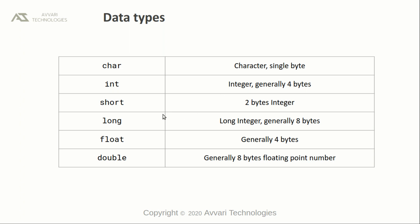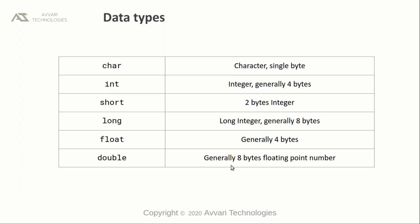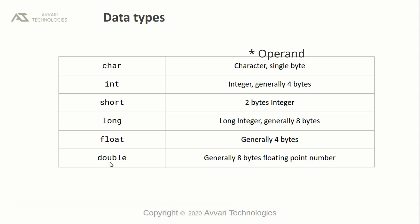Generally short is a two-byte integer, long is eight bytes, float is four bytes, and double is an eight-byte floating point number. Generally these are all signed data types. We can use the unsigned qualifier as well.